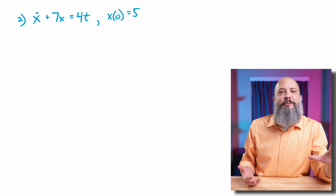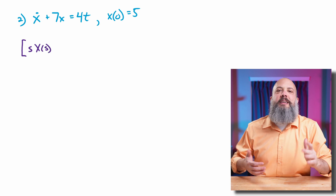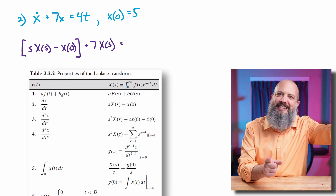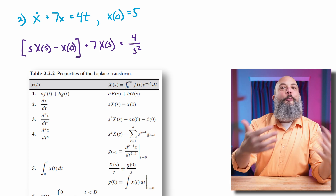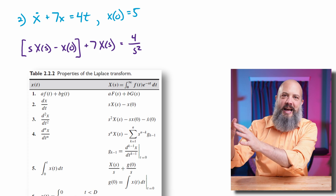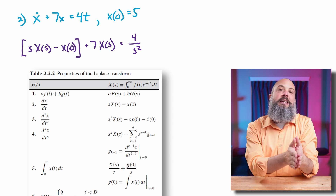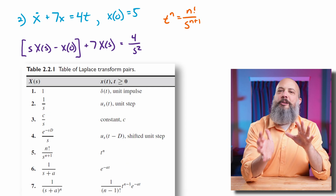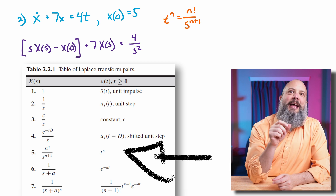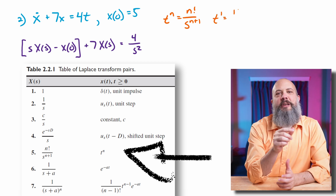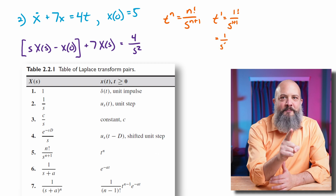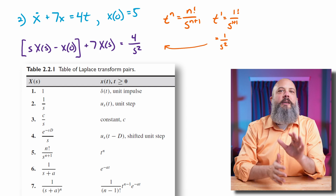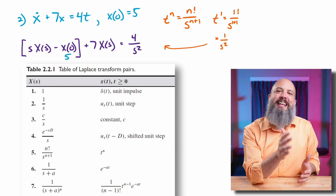Second example problem: a first order differential equation this time, meaning x-dot is the highest derivative term. But now we've got 4t on the right hand side — a ramp function, like a linear line that's increasing with slope of 4. So the forward Laplace transform: the left hand side is similar to before — the x-dot term becomes s times x(s) minus the initial position, plus 7x becomes 7x(s). But the right hand side, 4t — checking the Laplace transform table, t to the n equals n factorial over s to the n plus 1. So for t to the first power with n equals 1, that's 1 factorial over s squared, which is 1 over s squared. So 4t becomes 4 over s squared in the frequency domain.